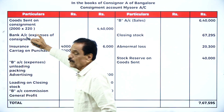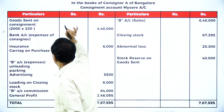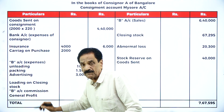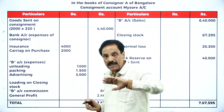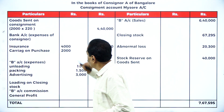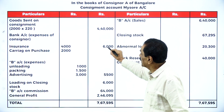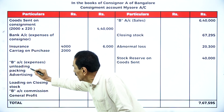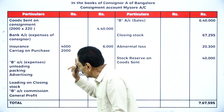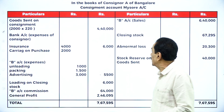Now we solve the consignment account. On the debit side: goods sent on consignment — 2,000 vehicles at invoice price Rs. 220 = Rs. 4,40,000. Expenses of the consignor: insurance Rs. 4,000 and carriage Rs. 2,000, totalling Rs. 6,000. Expenses of the consignee: unloading, packing, and advertisement totalling Rs. 5,500.